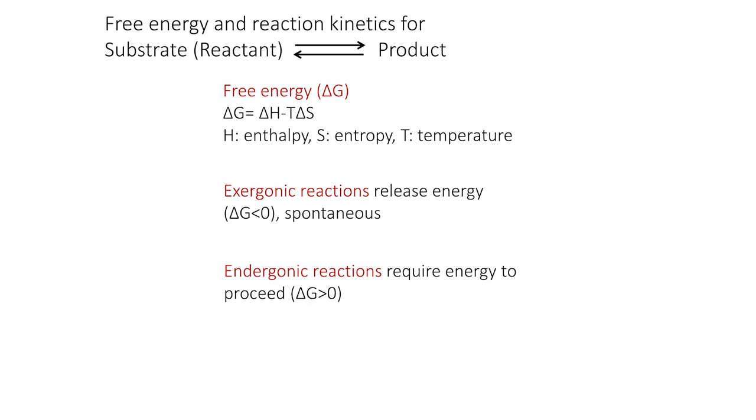The flip: endergonic reactions require energy to proceed, where delta G is positive. And delta G is zero, the reaction is at equilibrium. The production of the products is the same as the back reaction to the production or the regeneration of the reactants.